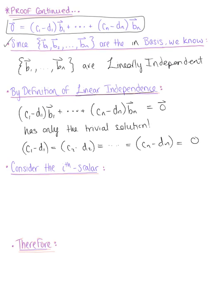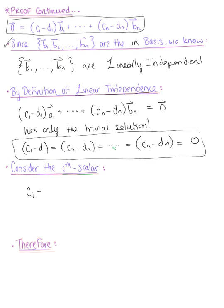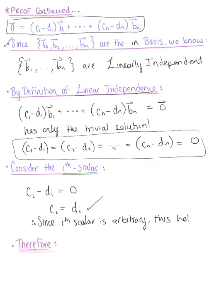Let's consider the i-th scalar of this equivalence. By the definition of linear independence, the i-th scalar c sub i minus d sub i is equal to zero. By adding d sub i to both sides, we see that c sub i equals d sub i. Since this is the i-th scalar and it is arbitrary, this holds true for all scalars.